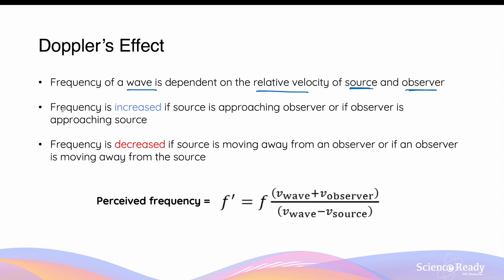In the Doppler effect, the frequency of the wave is increased if the source is approaching or moving towards the observer, or if the observer measuring the frequency of the wave is approaching or moving towards the source. Conversely, the frequency of the wave is decreased if the source is moving away from the observer, or if the observer is moving away from the source. In both scenarios, the wave's frequency or its wavelength will be changed depending on the relative velocity between the source and the observer.